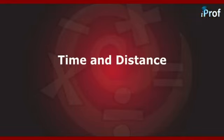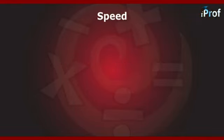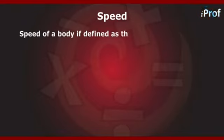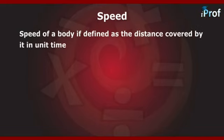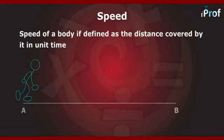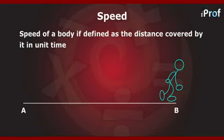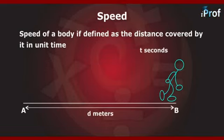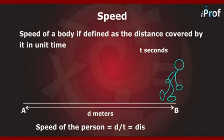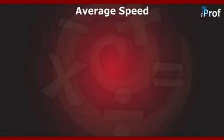First we will deal with the concepts of time and distance. The speed of a body is defined as the distance covered by it in unit time. If a person starts walking from point A and reaches point B, which is at a distance d meters in t seconds, then the speed of the person is equal to d divided by t, which is distance upon time.